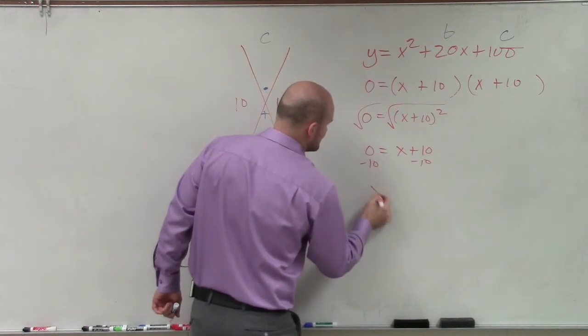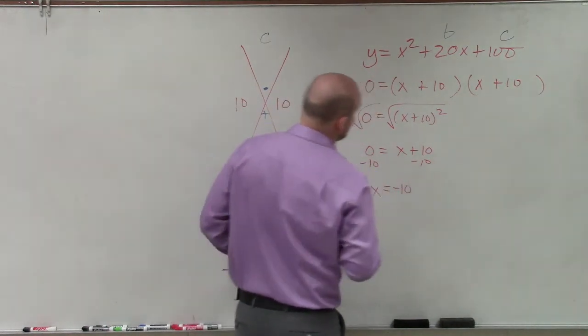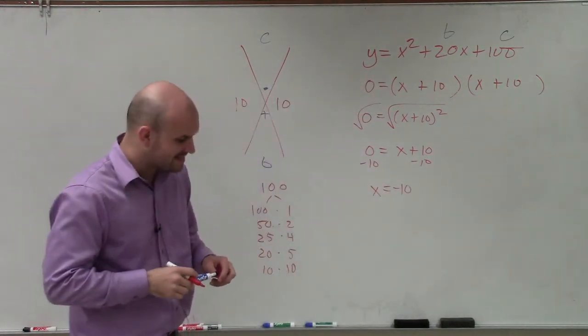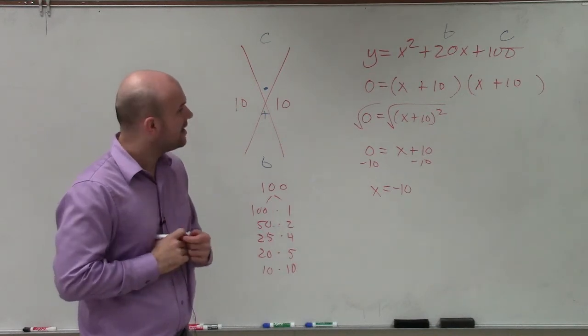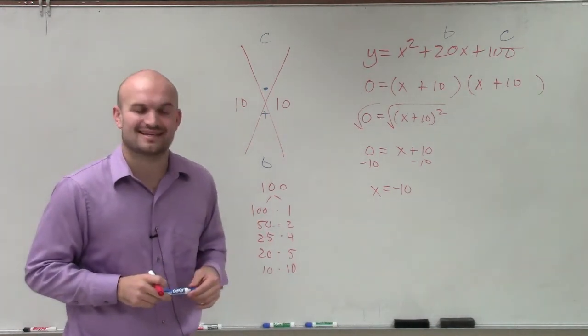Subtract 10. Subtract 10. So x equals negative 10. So there you go, ladies and gentlemen. That is how you factor a trinomial, and actually a perfect square trinomial. Thanks.